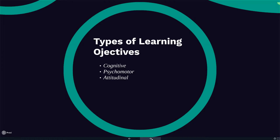There are three types of learning objectives. Number one, cognitive objectives emphasize knowing, conceptualizing, comprehending, applying, synthesizing, and evaluating.